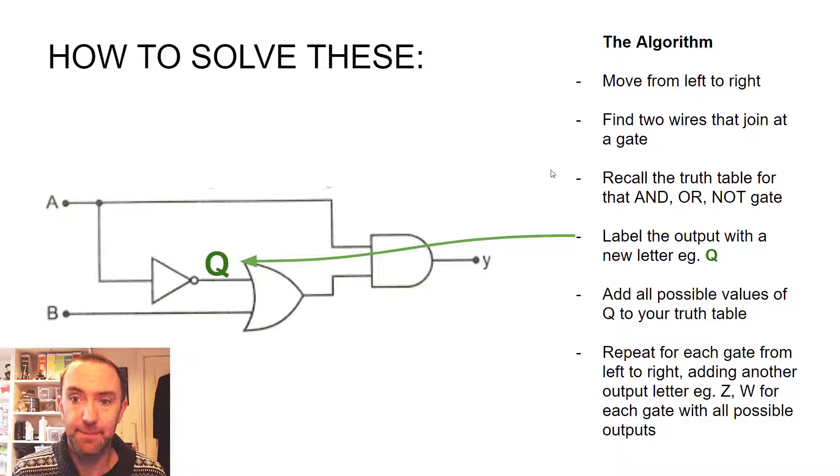So let's do one of these classic exam-y type questions. The algorithm here is we move from the left to the right. We do a gate at a time. We look to get two inputs and then we just look at what's coming out of that. So we're just zooming into one part at a time, working from left to right. And often the outputs of the gates aren't labeled, we just make a label.